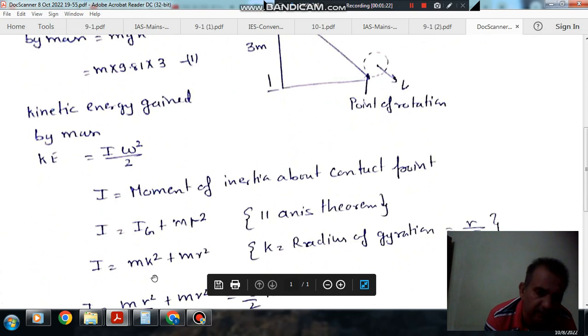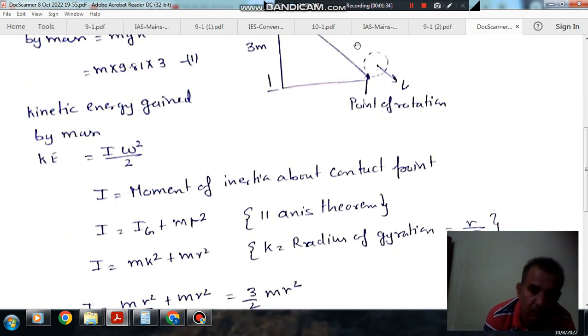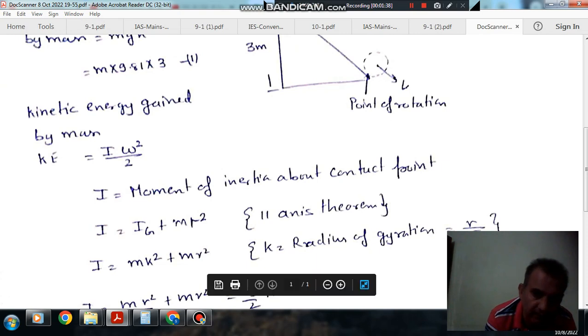Ig is given by mk squared, where k is the radius of gyration. In case of a solid cylinder, it can be treated as a disc. The radius of gyration for a solid disk is r over root 2.